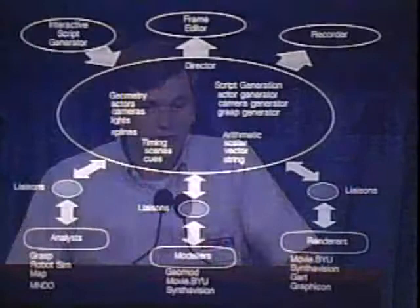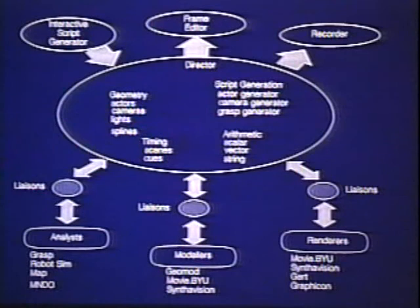We've built a small computer animation system called OSCAR — the Object-Oriented Scene Animator — meant to provide an industrial animation capability at our research laboratory. The objects it has are things we call analysts, modelers, and renderers. Typically these are liaisons to external programs, because we don't want to build a complete mechanisms analysis package for constraints — we'd rather access software that engineers have already developed. Within the system we also have arithmetic objects: scalars, vectors, and strings.